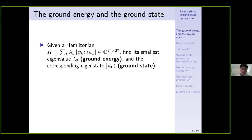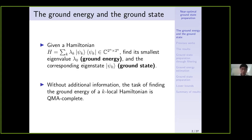The problem setup is very simple. We suppose we are given a quantum Hamiltonian of size 2^n times 2^n, and the goal is to find its smallest eigenvalue lambda_0, which we call the ground energy, and the corresponding eigenstate, which we call the ground state. This is a very basic problem, but also a very hard one because there is a well-known result that without additional information, the task of finding the ground energy of a k-local Hamiltonian is QMA-complete.